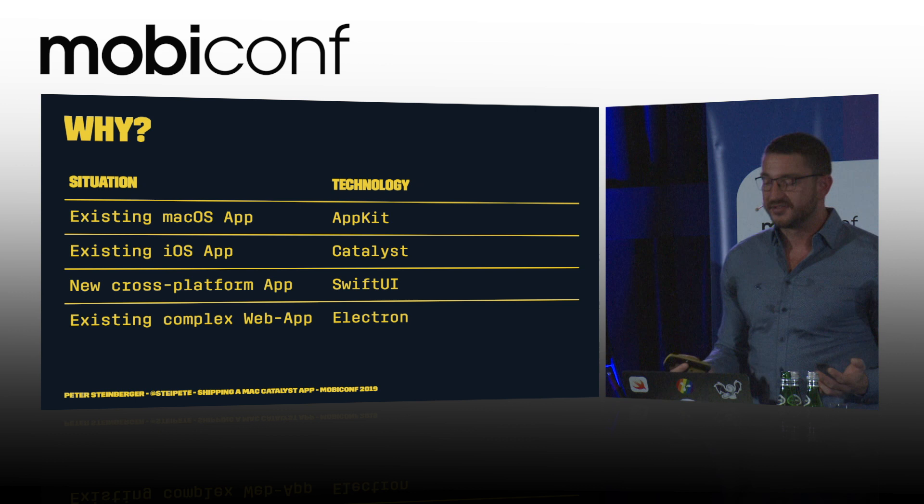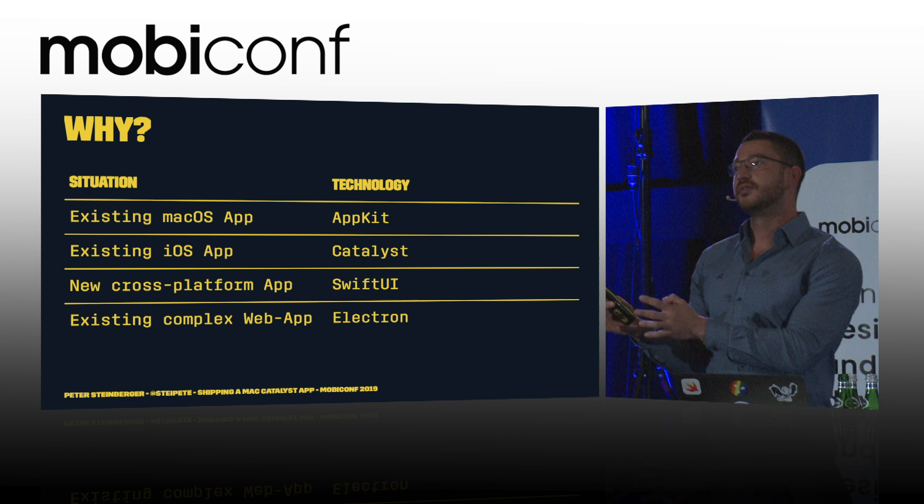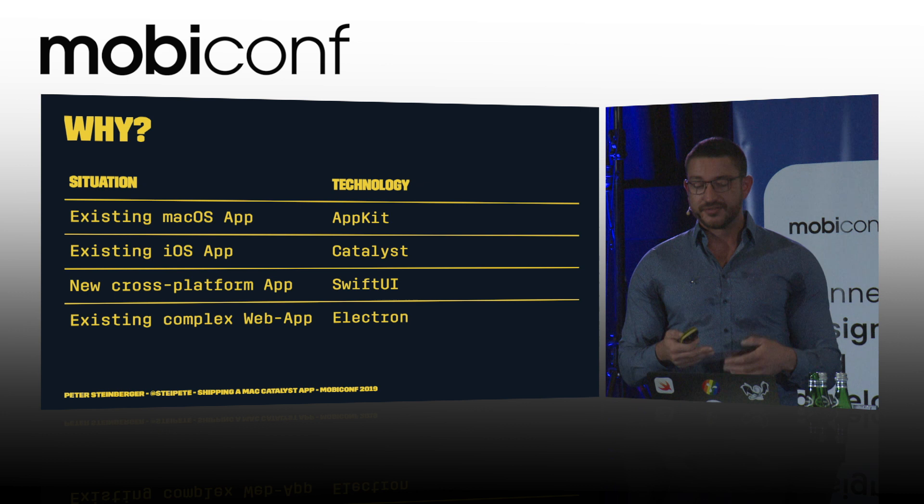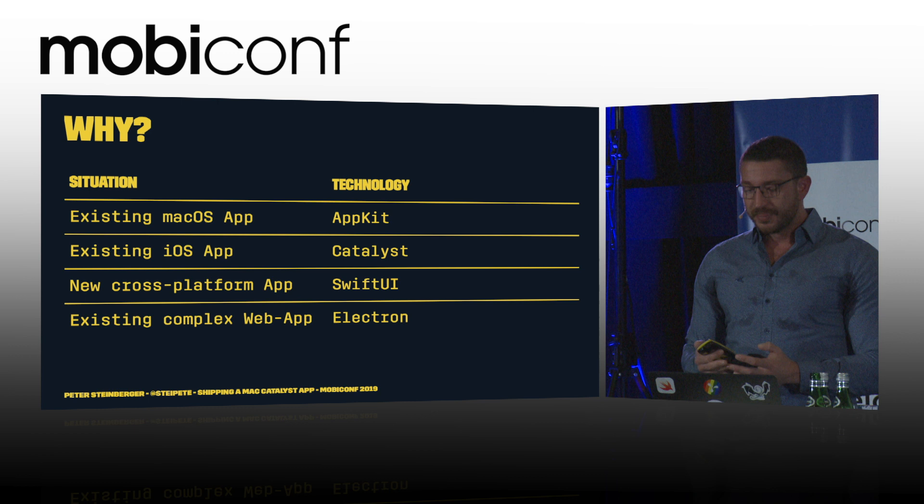For example, I predict that Slack won't go with Catalyst, because their mobile client is not as feature-rich as their existing Electron client, and they don't care or focus enough on the Mac to invest the time to bring their mobile client on par. On the other hand, Netflix has a great web client and a great iOS/iPad client with offline viewing. For them, Catalyst would be a great addition to bring offline viewing to the Mac with very minimal time — though it probably has more to do with licensing than technology.